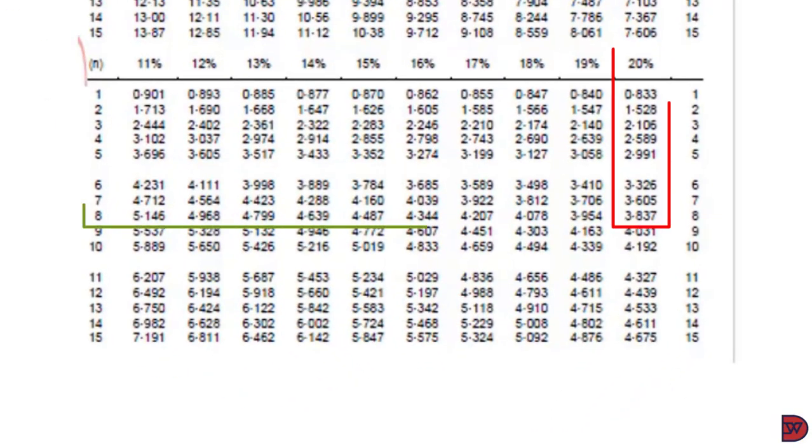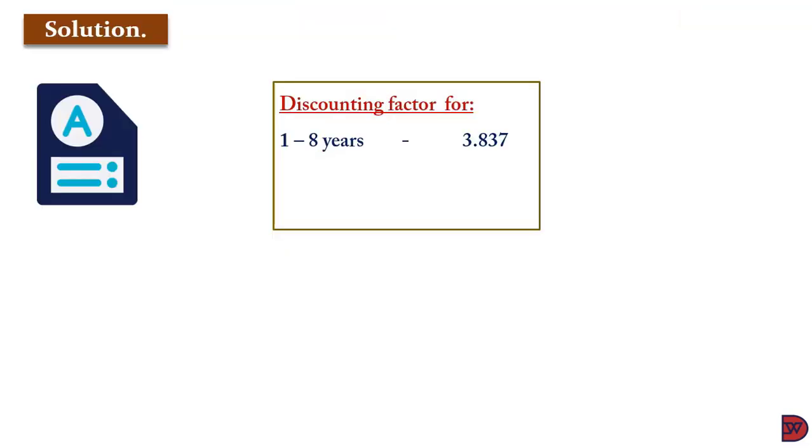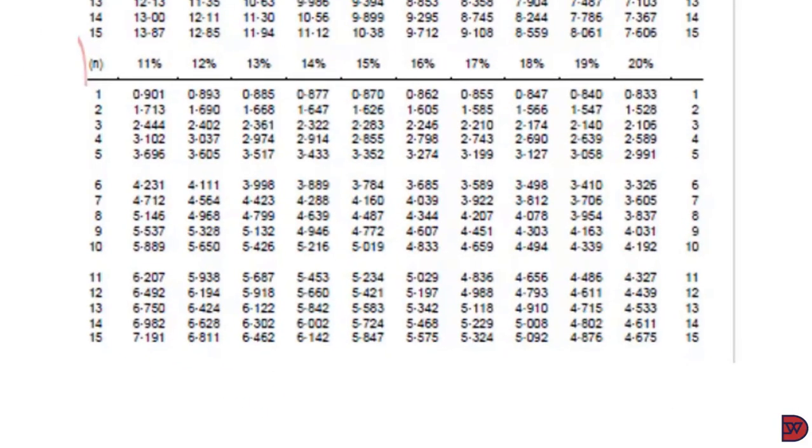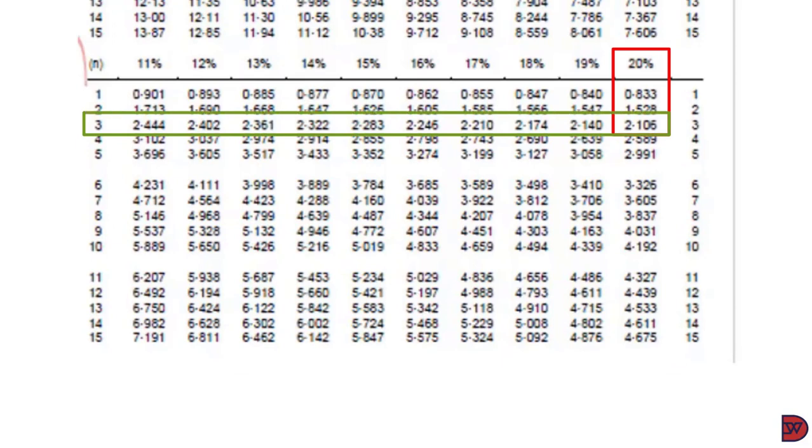So the discounting factor for 1 to 8 years using the annuity table will be 3.837. That is the first 8 years. Because it is going to receive it after the 3rd year, we will look for the annuity factor for 3 years using the table.